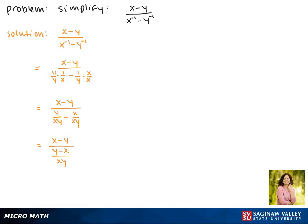Since we're dividing by a fraction here, we have to multiply by the reciprocal. So the numerator is going to stay the same. We have x minus y. We're going to multiply by the reciprocal of the denominator, so xy over y minus x.